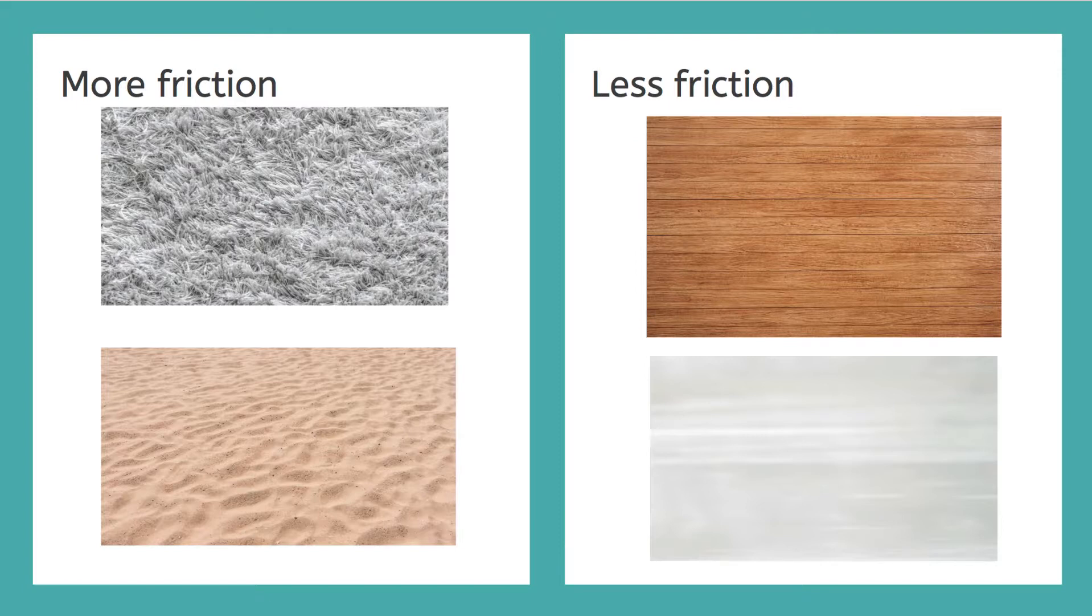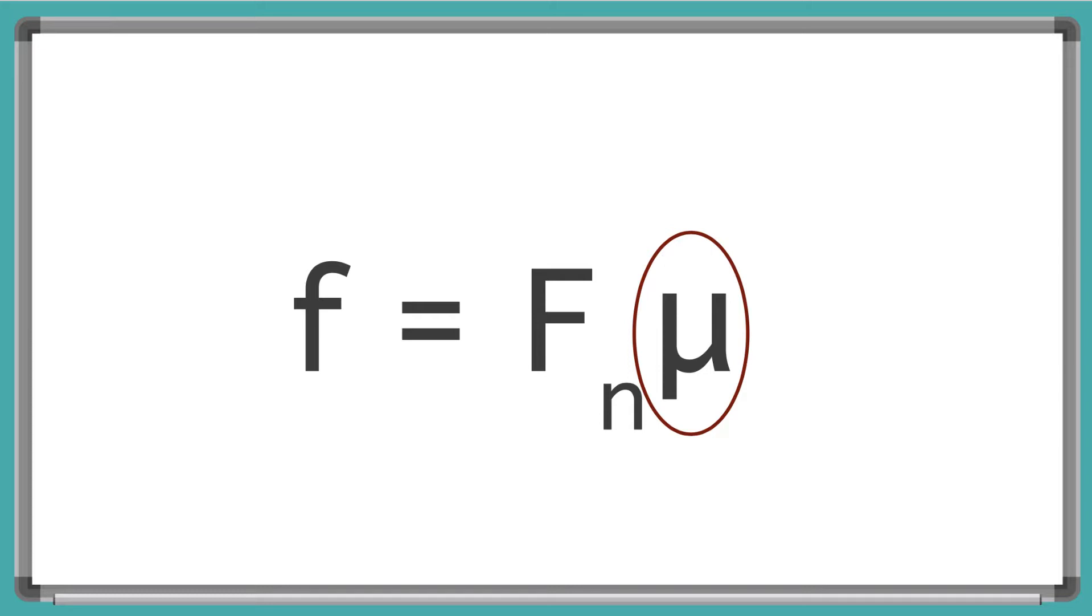And surfaces with less friction, like shiny wood floors and ice skating rinks, have a smaller mu. But you don't really have to worry about mu. It's just a number that you can look up in a chart to find the amount of friction for different surfaces. And mu is sometimes called the coefficient of friction for a surface.